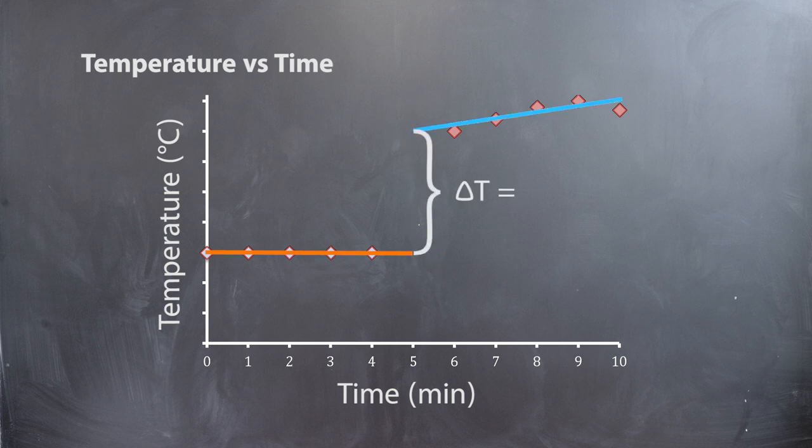The change in temperature delta t equals t final minus t initial.